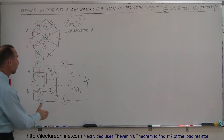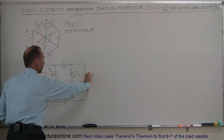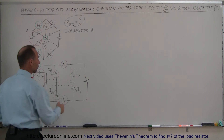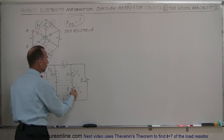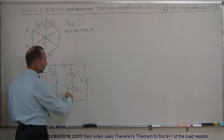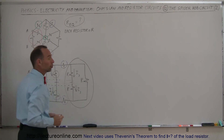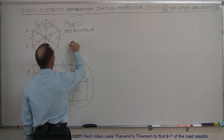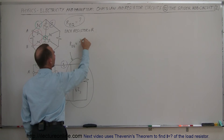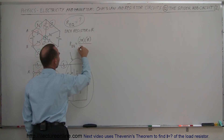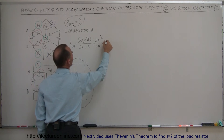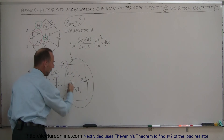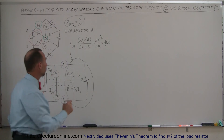Now let's find the equivalent resistance of this circuit. It's simply solving it from the back to the front. We have two parallel branches: one is R and the other is 2R combined. Using the product-over-sum method: R equivalent equals 2R times R divided by 2R plus R, which gives 2R squared divided by 3R, equal to two-thirds R. So the equivalent resistance of these back two branches is two-thirds R.